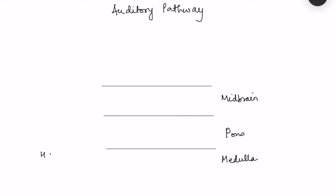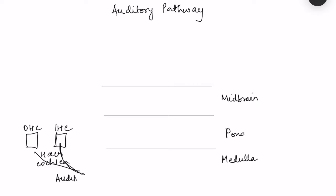The auditory pathway starts from hair cells in the cochlea. There are two types: outer hair cells and inner hair cells. Both receive afferent and efferent connections; however, major afferents come from inner hair cells and major efferents go to outer hair cells. The afferents from these hair cells form the auditory component of the vestibulocochlear nerve, consisting of dendrites of bipolar neurons in the spiral ganglion, whose axons travel to the medulla.